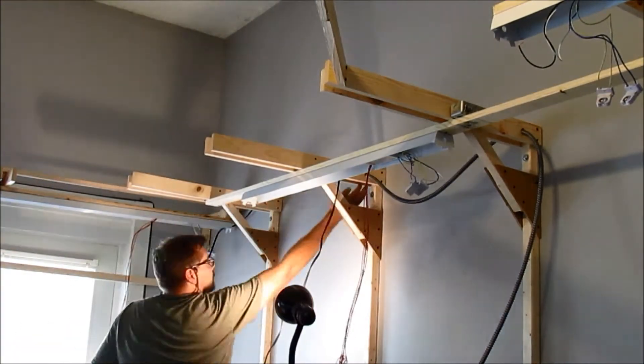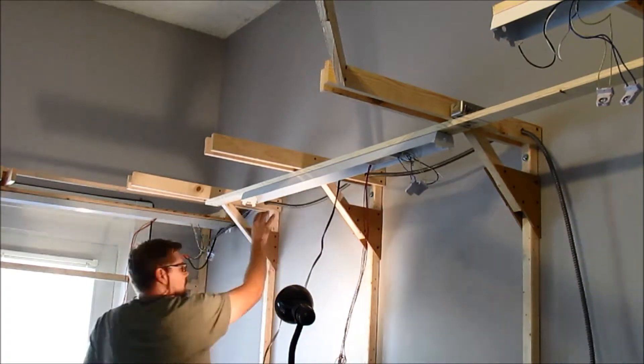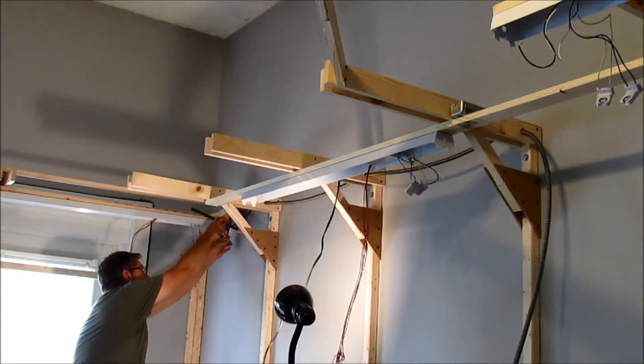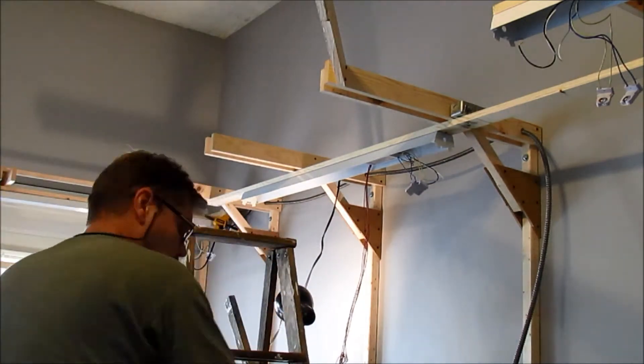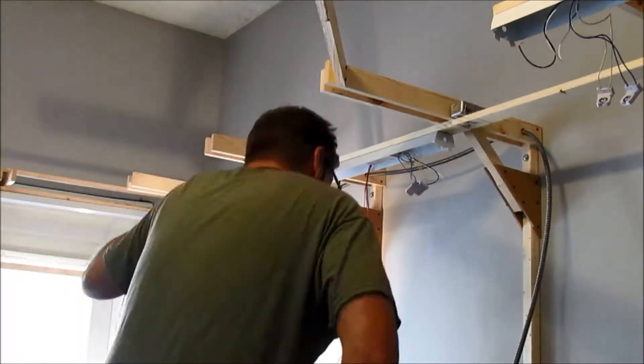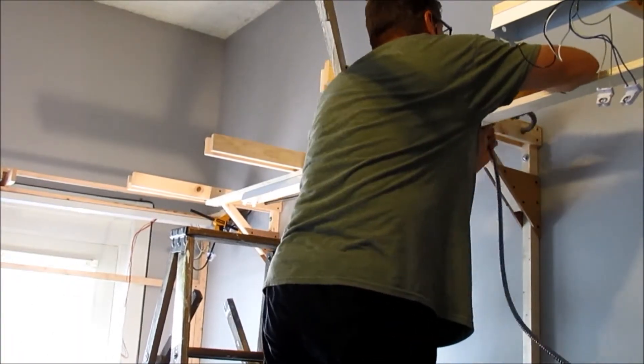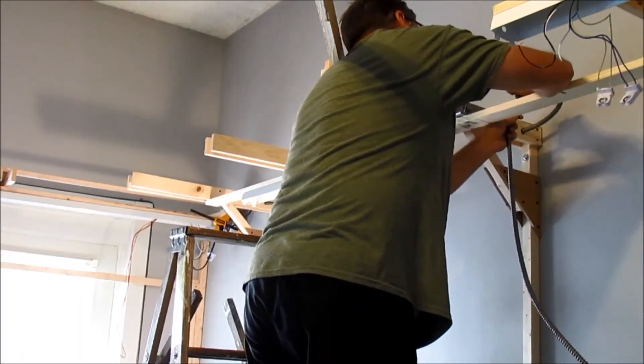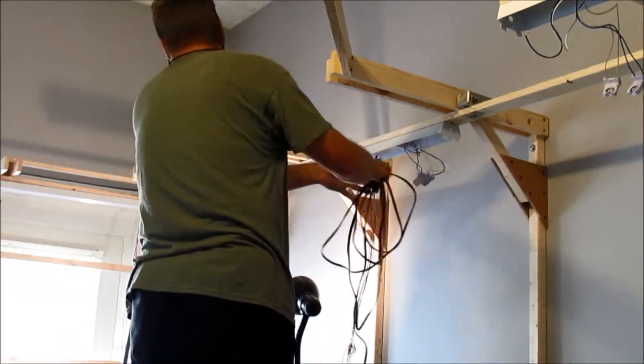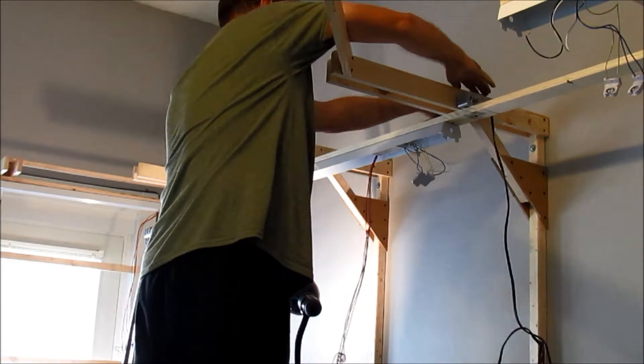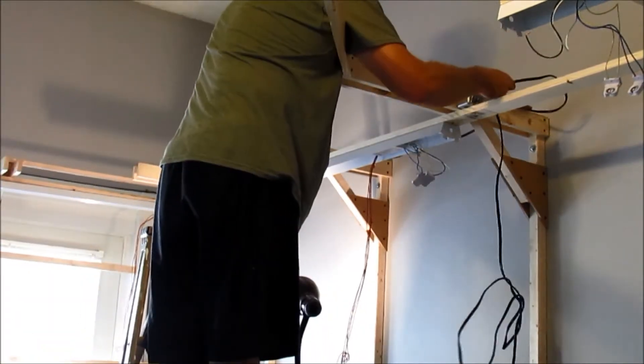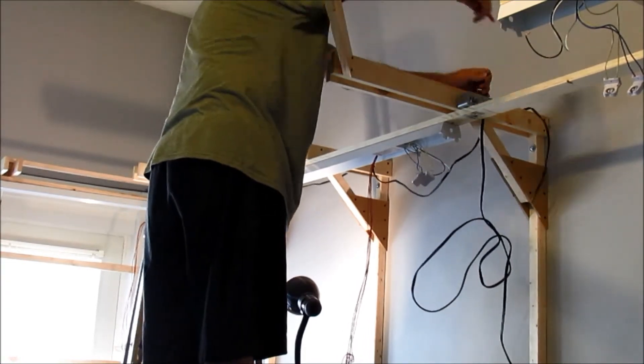Okay, so here I'm running the conduit through the twin bracket arms. Now, before I did this, I drilled some holes out using a three-fourths inch spade bit. And the reason I'm running the conduit through the holes right now is not to mount it, but just to get an approximate length so that I can cut the conduit with a hacksaw.